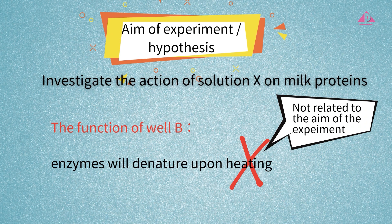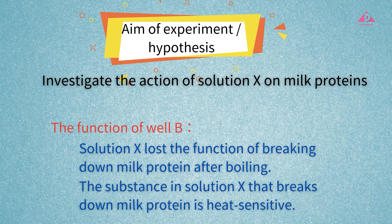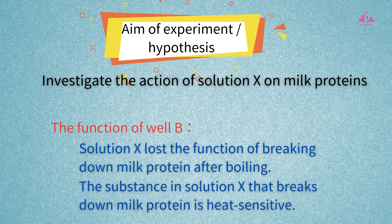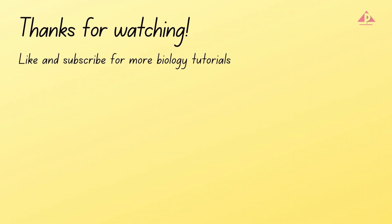So showing the property of enzymes is not the function of well B. We can deduce that the function of well B is to prove that Solution X will lose its ability to break down milk proteins after boiling, and hence confirm that the substance in Solution X that breaks down milk proteins is heat sensitive. We've had a brief introduction on the definition and function of control setups. In the next video, we will look at the relationship between control setups, hypothesis, and conclusion.